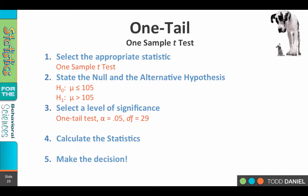We're using a one-tailed test with an alpha level of 0.05 and 29 degrees of freedom — 29 because our sample size is 30. To find our critical value, go to your t-table, look for the columns for a one-tailed test, the sub-column for 0.05 alpha level, and go down to degrees of freedom equal to 29. You should find a critical value of positive 1.699. Since we're only interested in increases, we use positive 1.699 only.